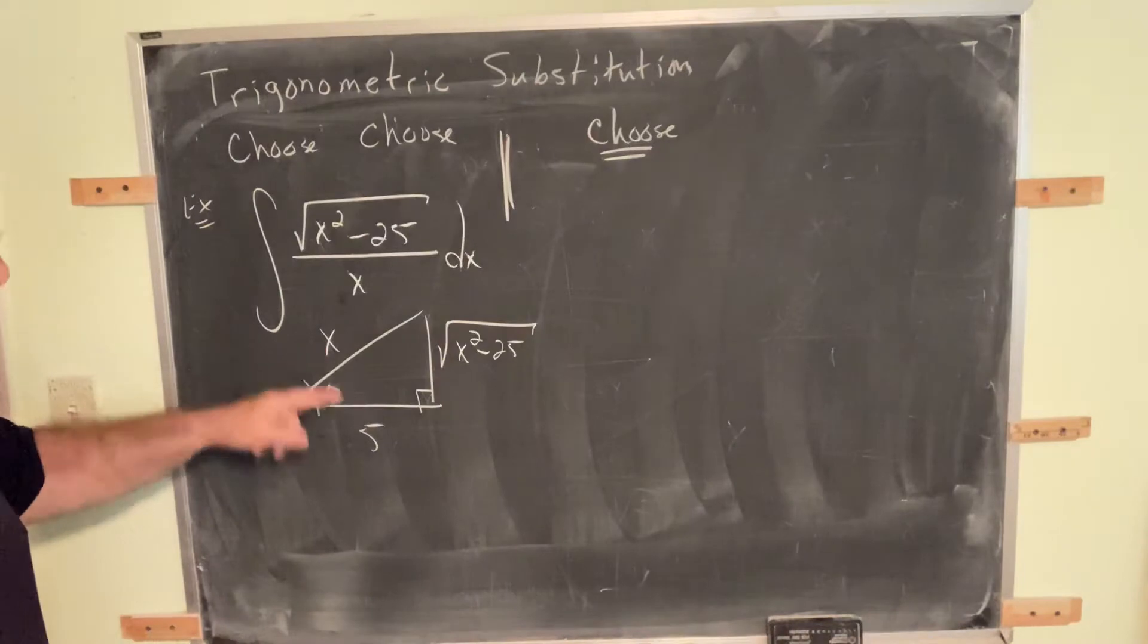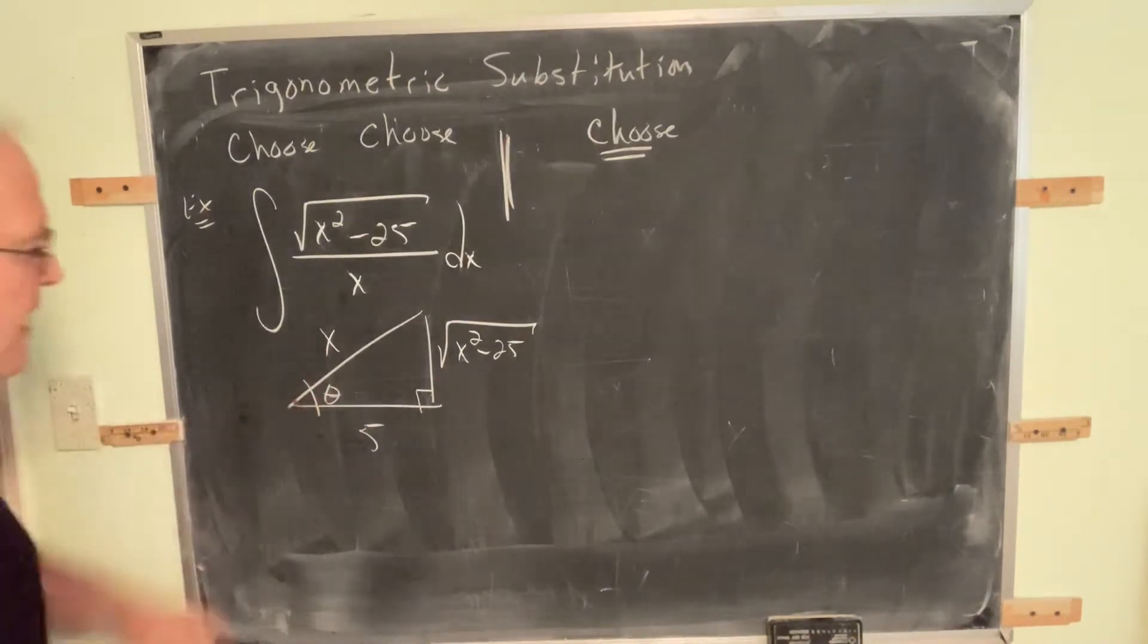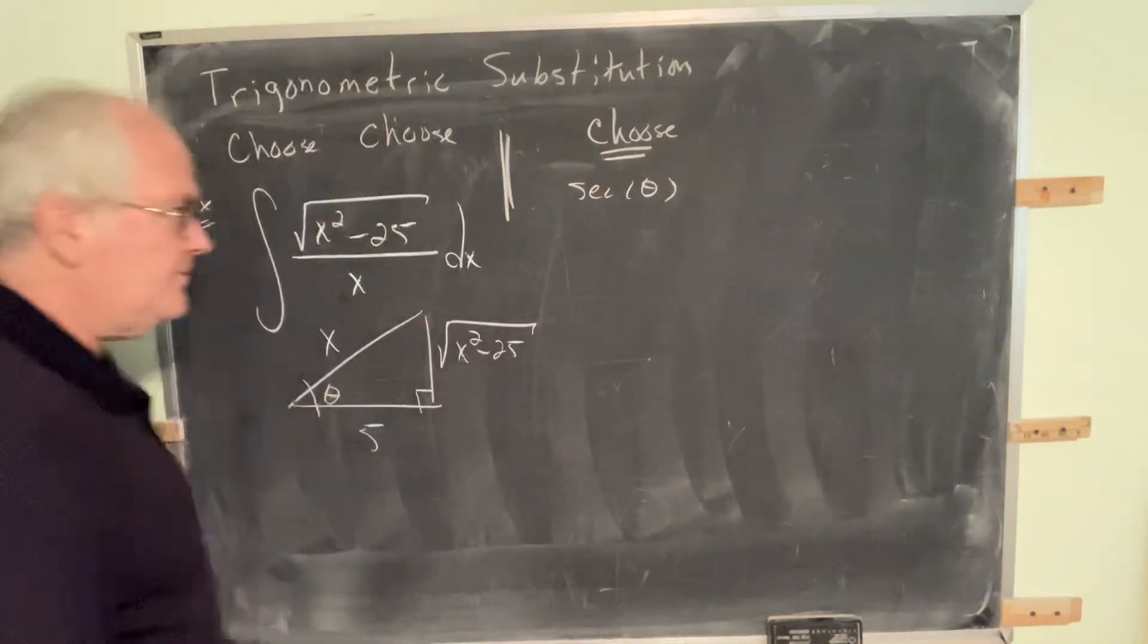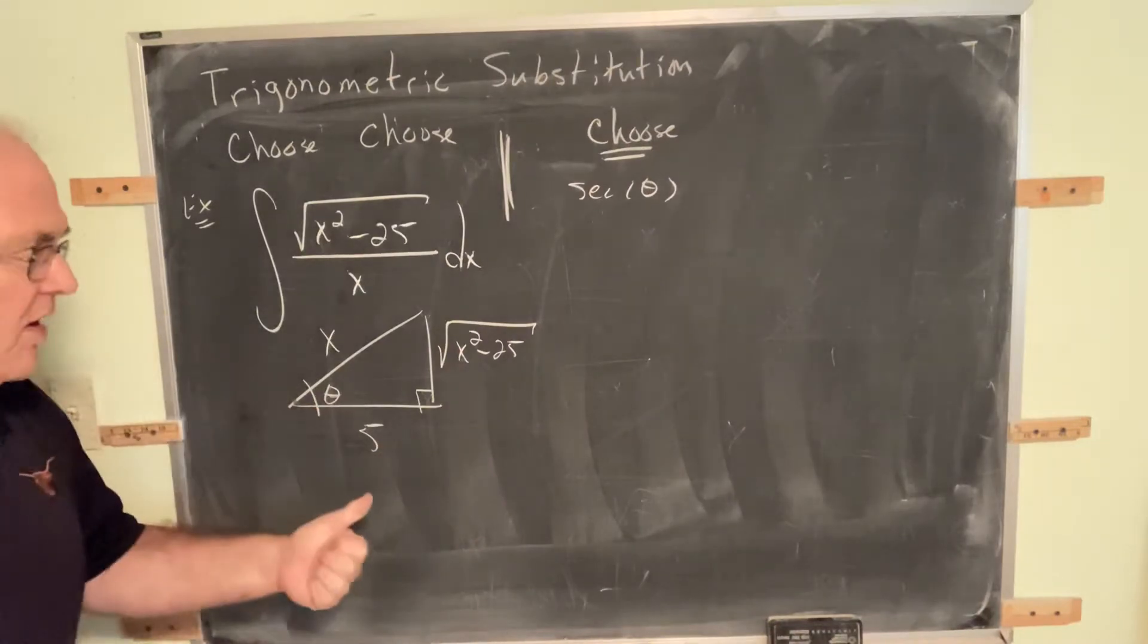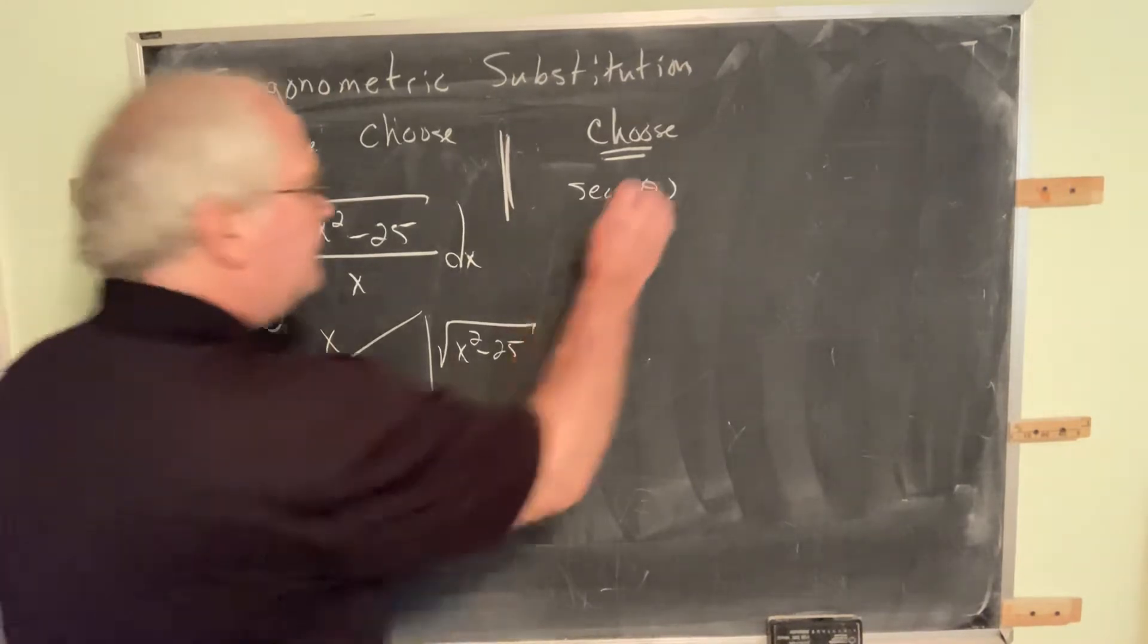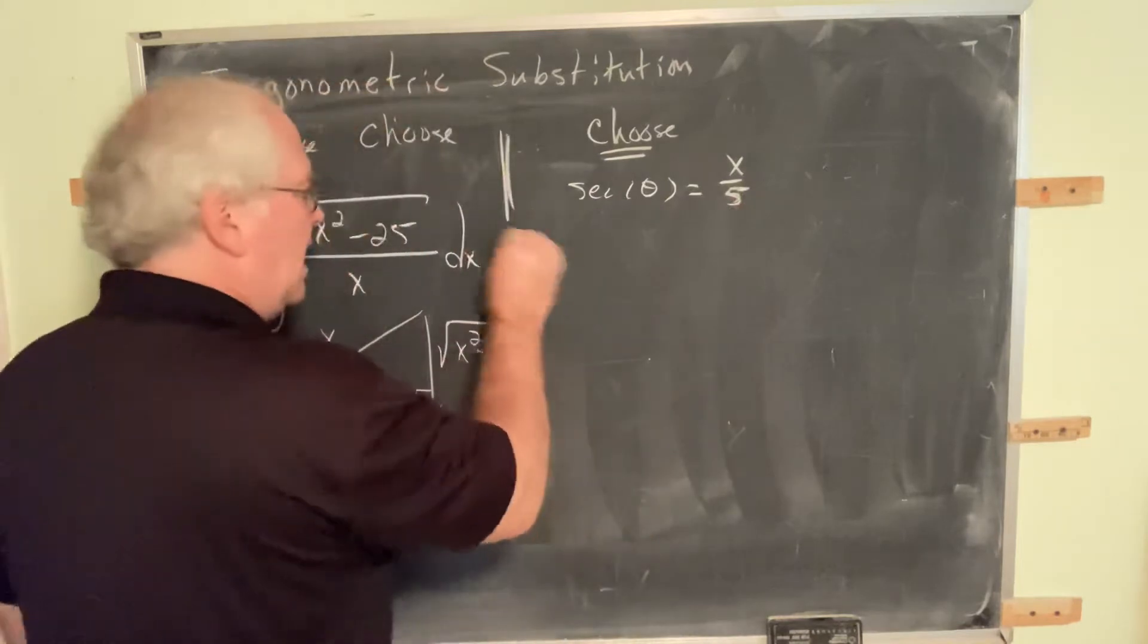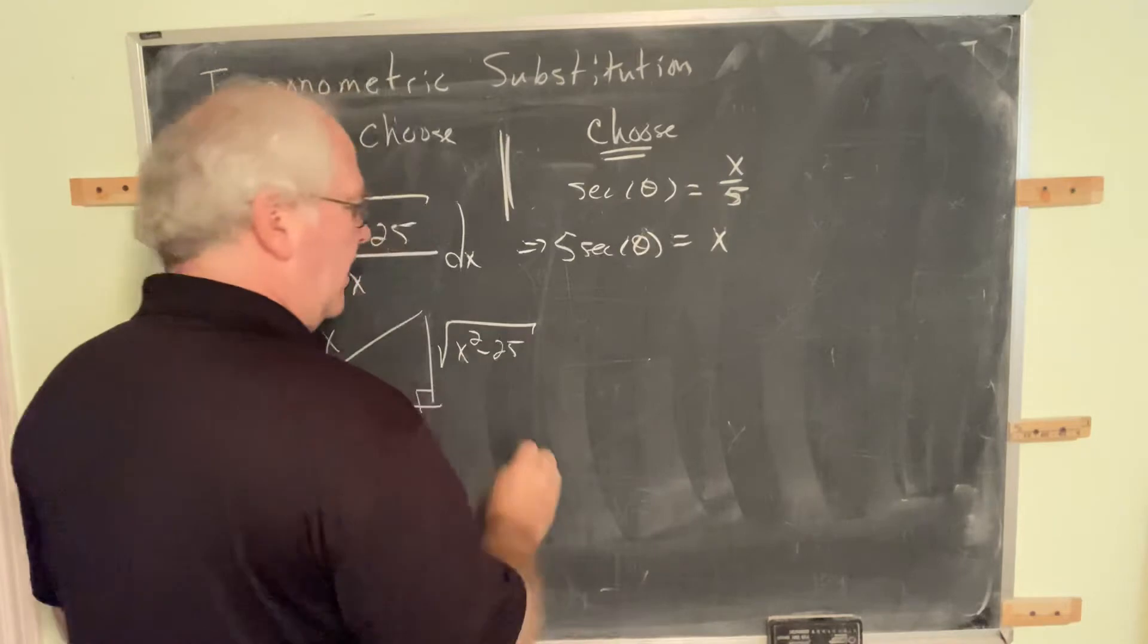We could choose cosine. Cosine is 5 over x. Or we could choose secant. Secant is x over 5, hypotenuse over adjacent. So, you choose the function that does not involve the radical. And here it is. Wait for it. It keeps the variable in the numerator. I want the variable in the numerator. We don't want 5 over x. I want x over 5. So, from the perspective of theta, we choose secant theta. Secant theta is x over 5. And then move the constant over.